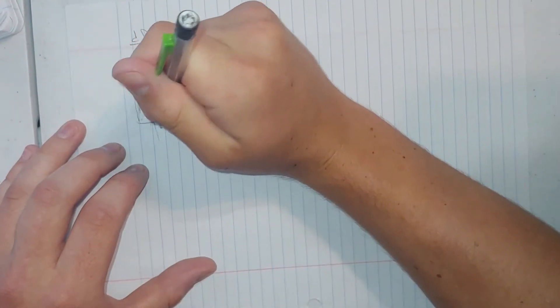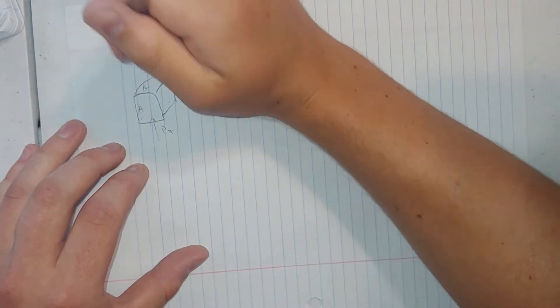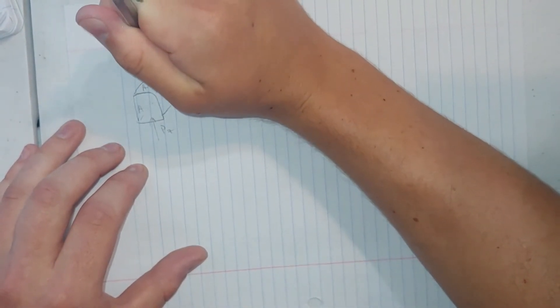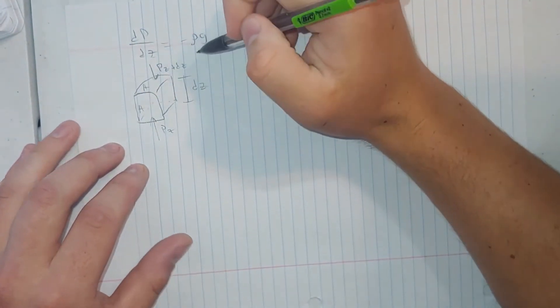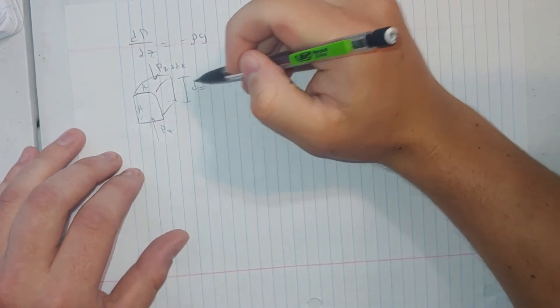Now this box is going to have a pressure acting on it from the bottom labeled pz, and a pressure acting on the top labeled p(z+dz). The plus dz comes from the height.